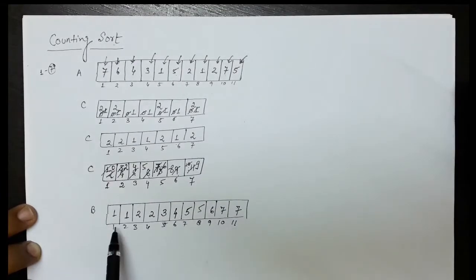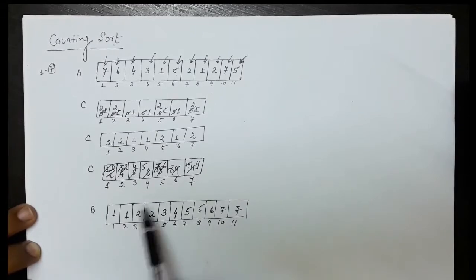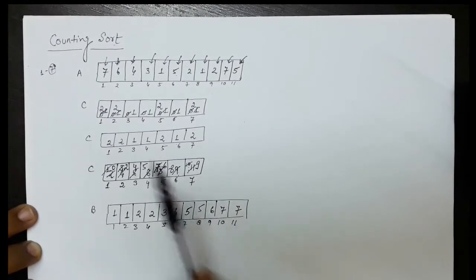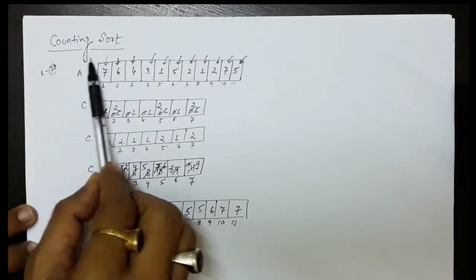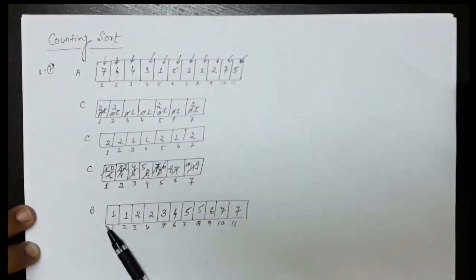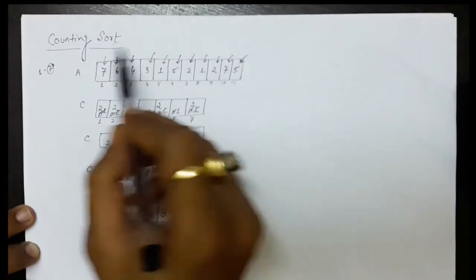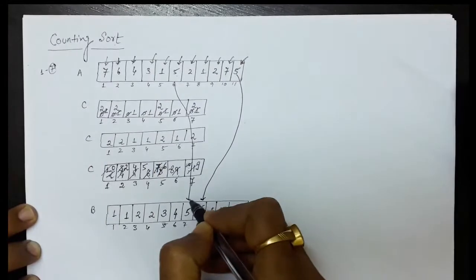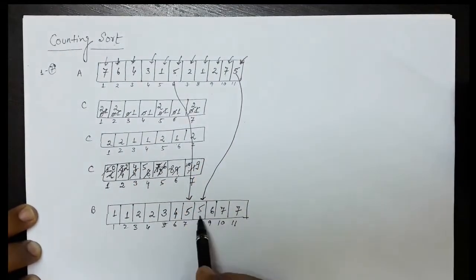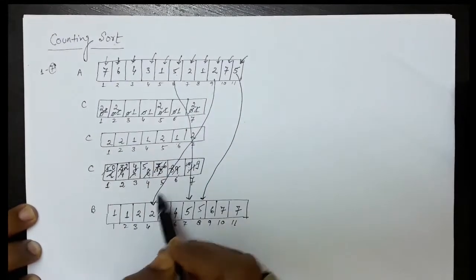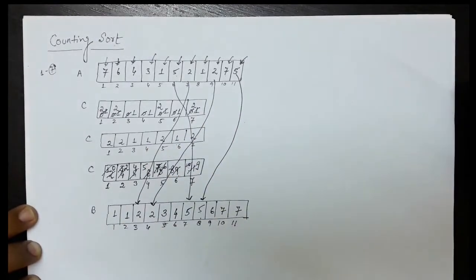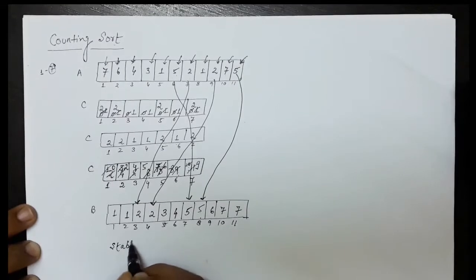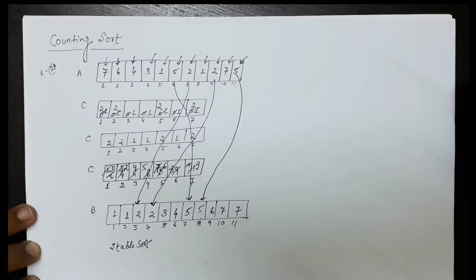This is the sorted array — all numbers are sorted. We observe that by starting from the back side and storing numbers, we get elements in ascending sequence. This can also be done from the front. Because we stored from the back, the first 5 was stored at 8th position and the next 5 at 7th, maintaining relative order. Similarly, the first 2 went to 4th position and the second 2 to 3rd. Since the relative ordering is maintained, counting sort is also called a stable sort.